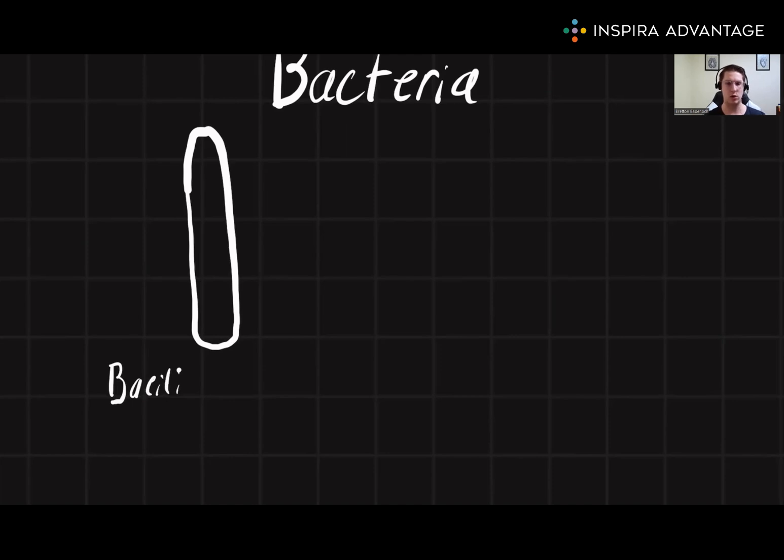The second type of bacteria you need to know are called cocci, and these are little spheres. It's all they are, just little circles.